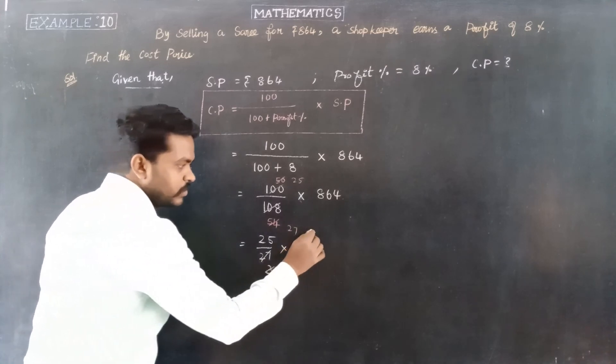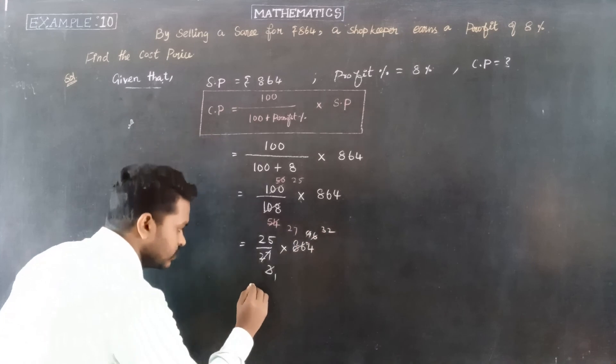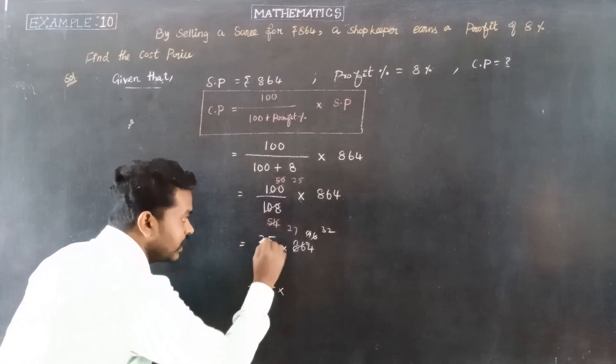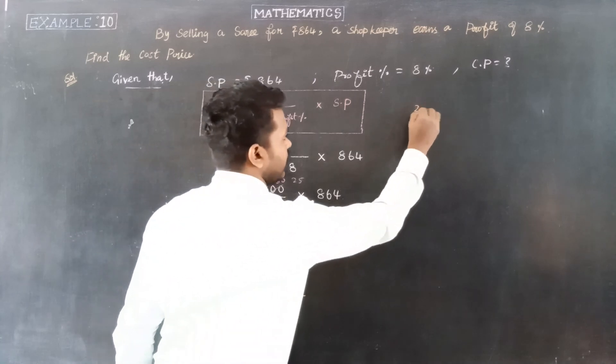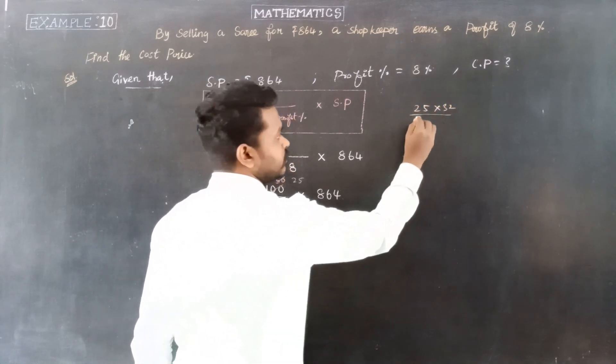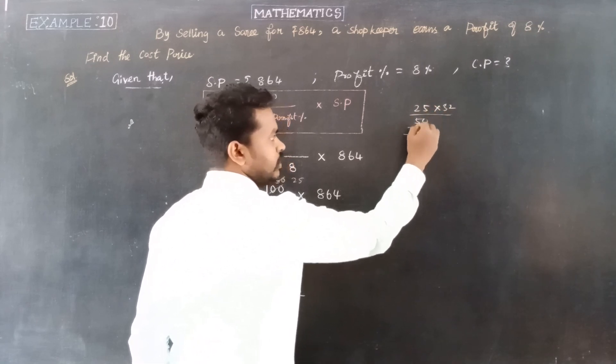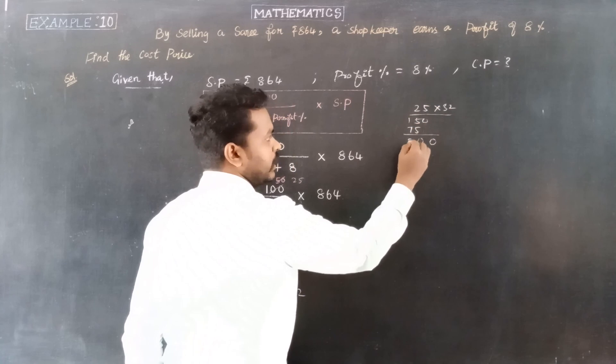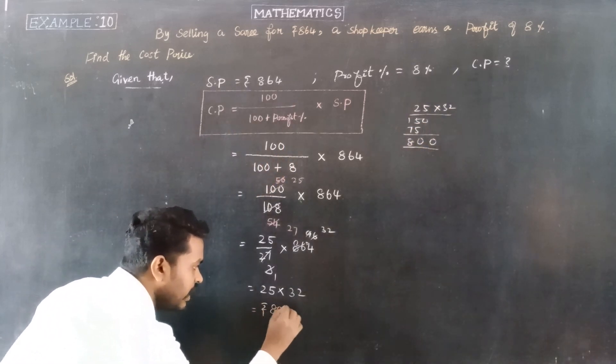3 into 3 is 9. 3 times 3 is 9, and 3 times 2 is 6. Now 25 into 32, we multiply 25 times 2 to get 50, and 25 times 3 is 75. 5 plus 5 is 10, carry 1, gives us 800.